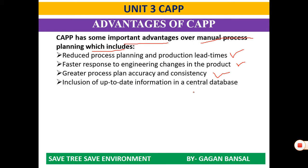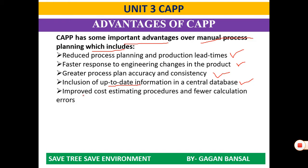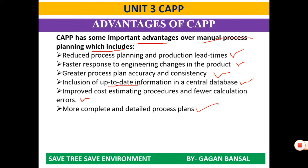Condition of up-to-date information in a central database — as modification and manipulation of data is very easy, we can have up-to-date data and information at all times. Improved cost estimation procedures and fewer calculation errors as it provides a high level of accuracy, so computer-aided process planning has improved cost estimation procedures with lesser calculation errors.